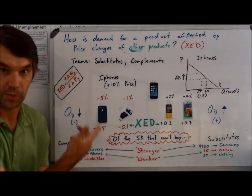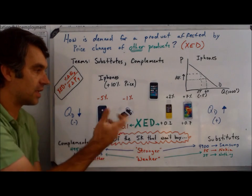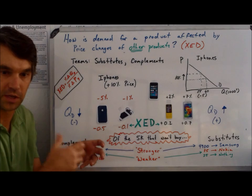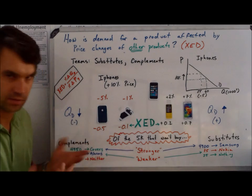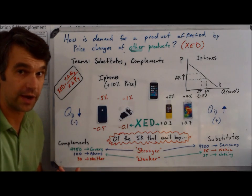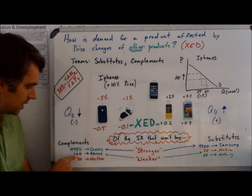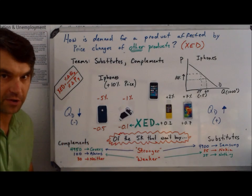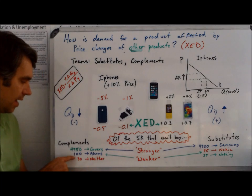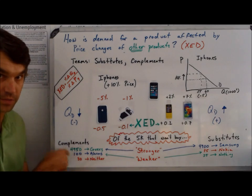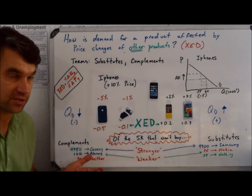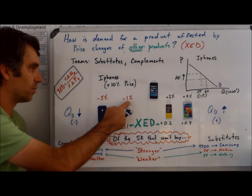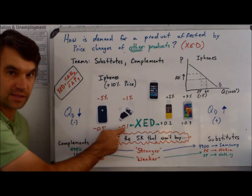Another thing people buy when they buy iPhones is like an old fashioned alarm clock that you stick into the iPhone so when your alarm goes, it makes a big loud noise. Let's say that of all the people who buy iPhones, maybe a couple hundred of those are going to buy this alarm, and they lose a hundred of those. That's only going to represent a smaller percentage. When we do the math, negative 1% over 10%, we're going to get a smaller XED value.